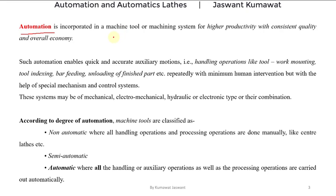Such automation enables quick and accurate auxiliary motions — that is, handling operations like tool mounting, work mounting, tool indexing, bar feeding, and unloading of finished parts. These auxiliary motions can be done repeatedly with minimum human intervention, but they are performed using special mechanisms and control systems.